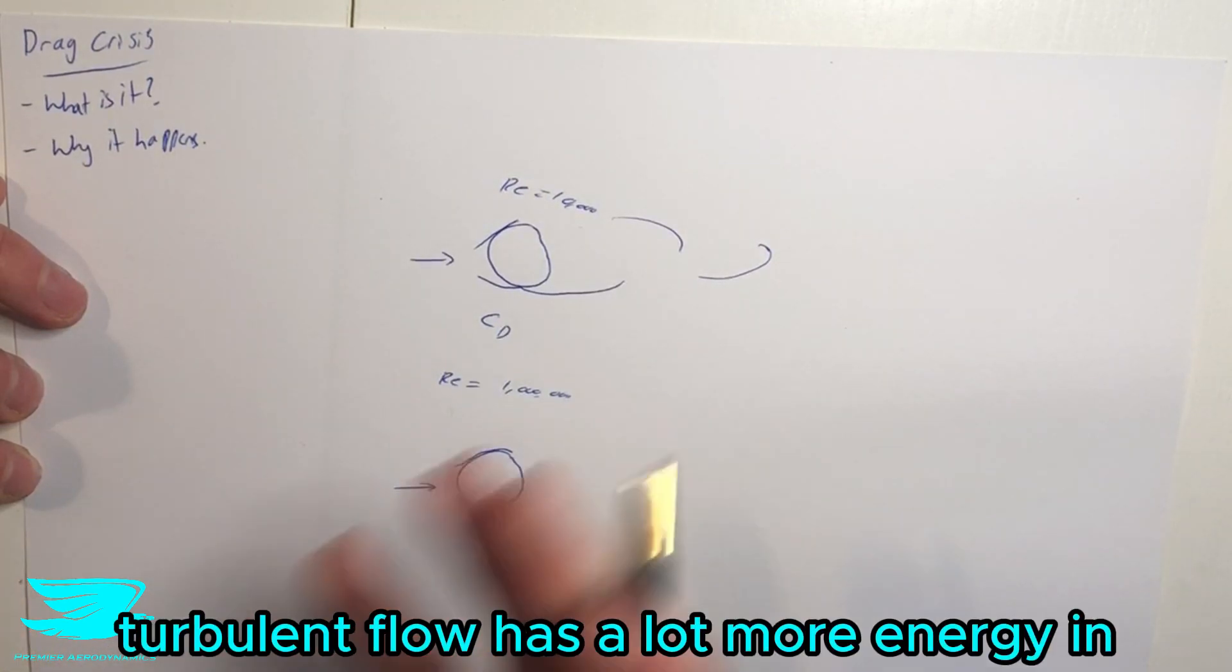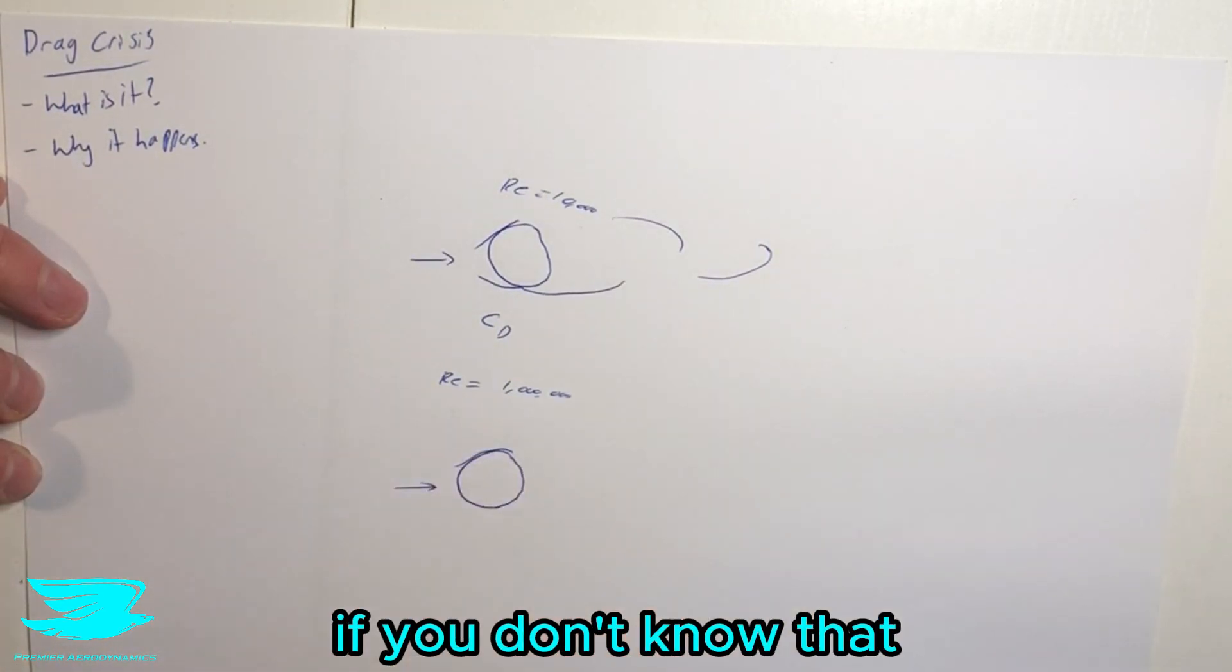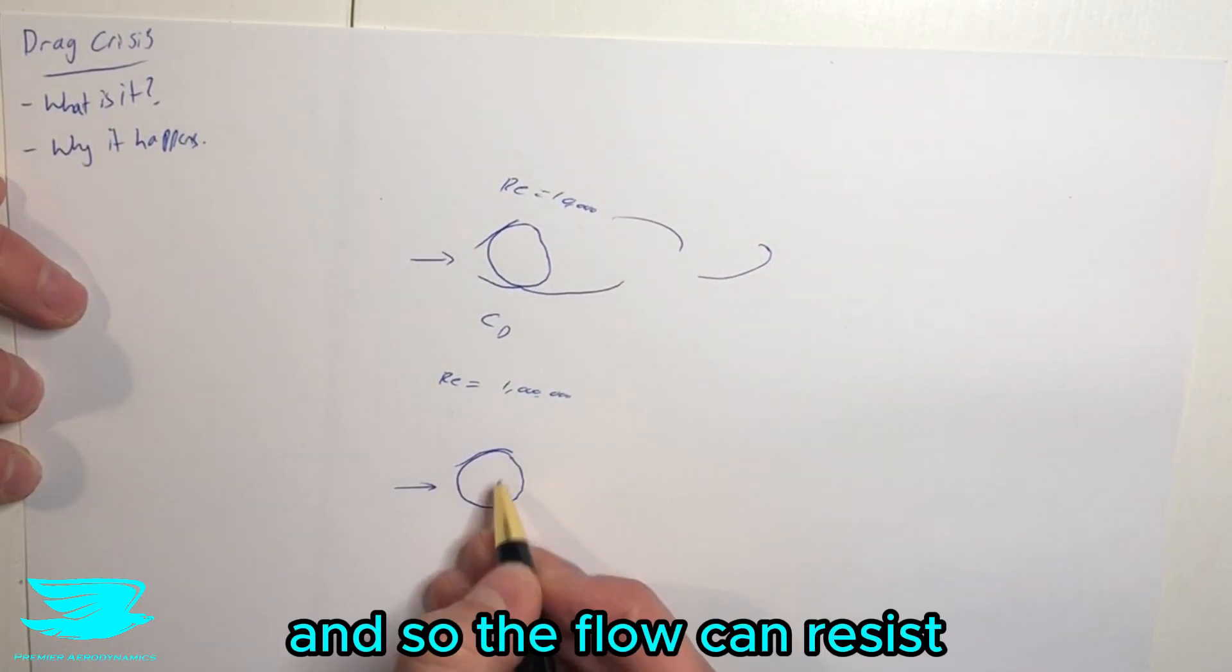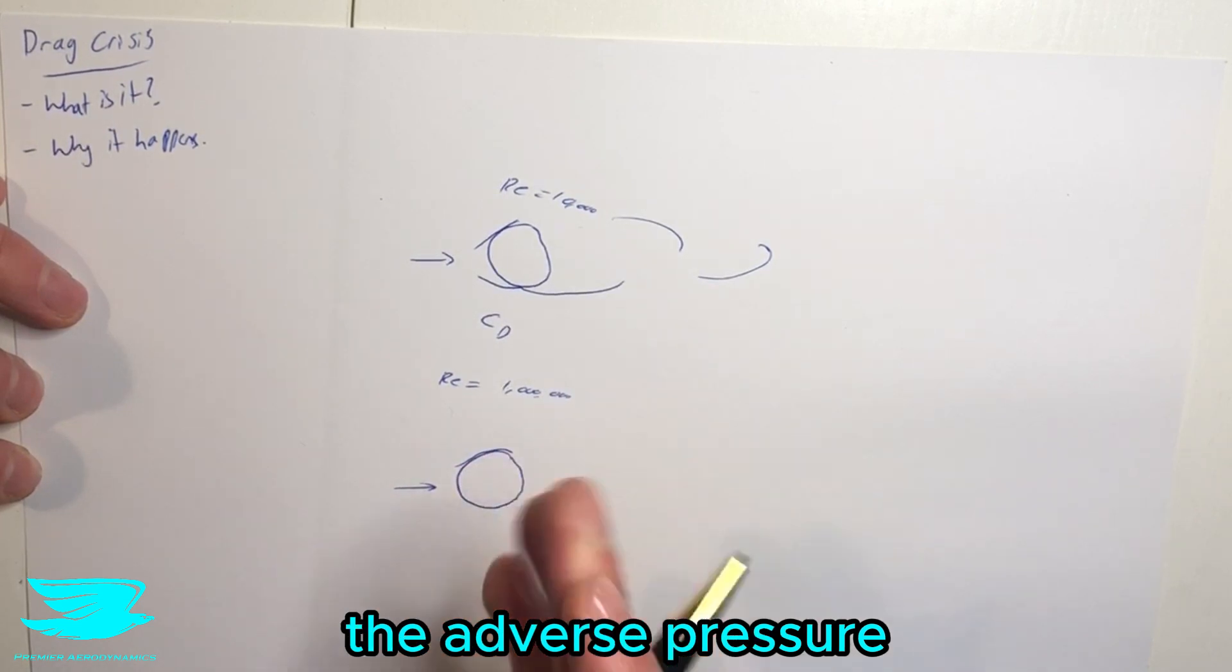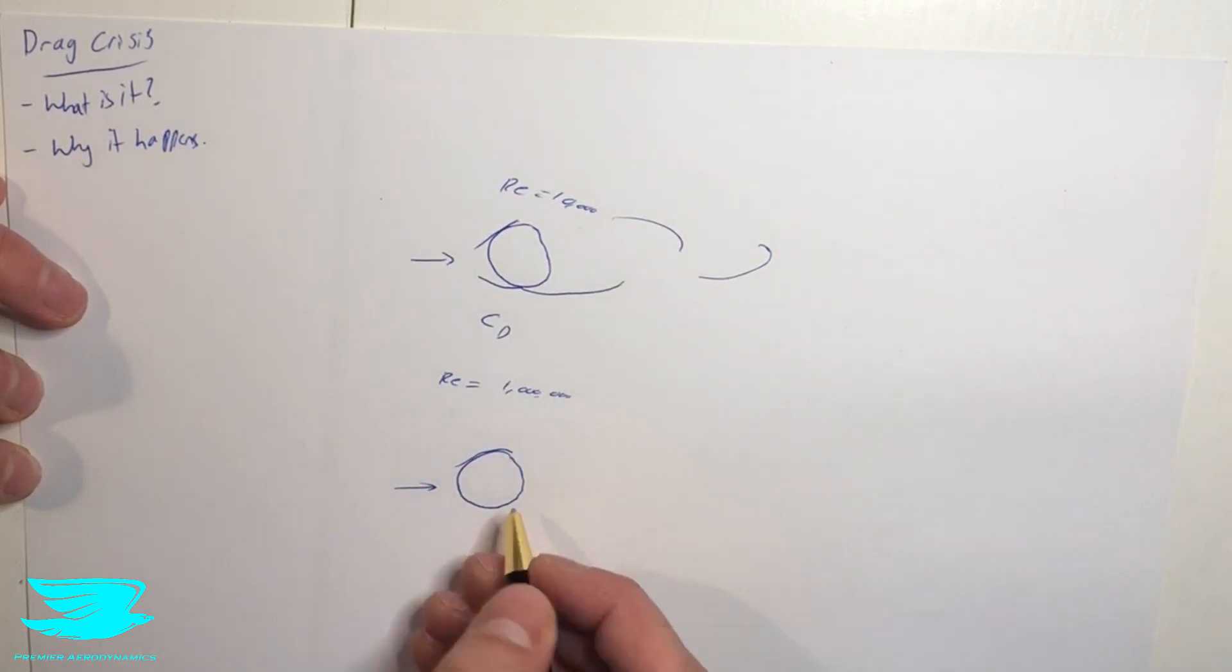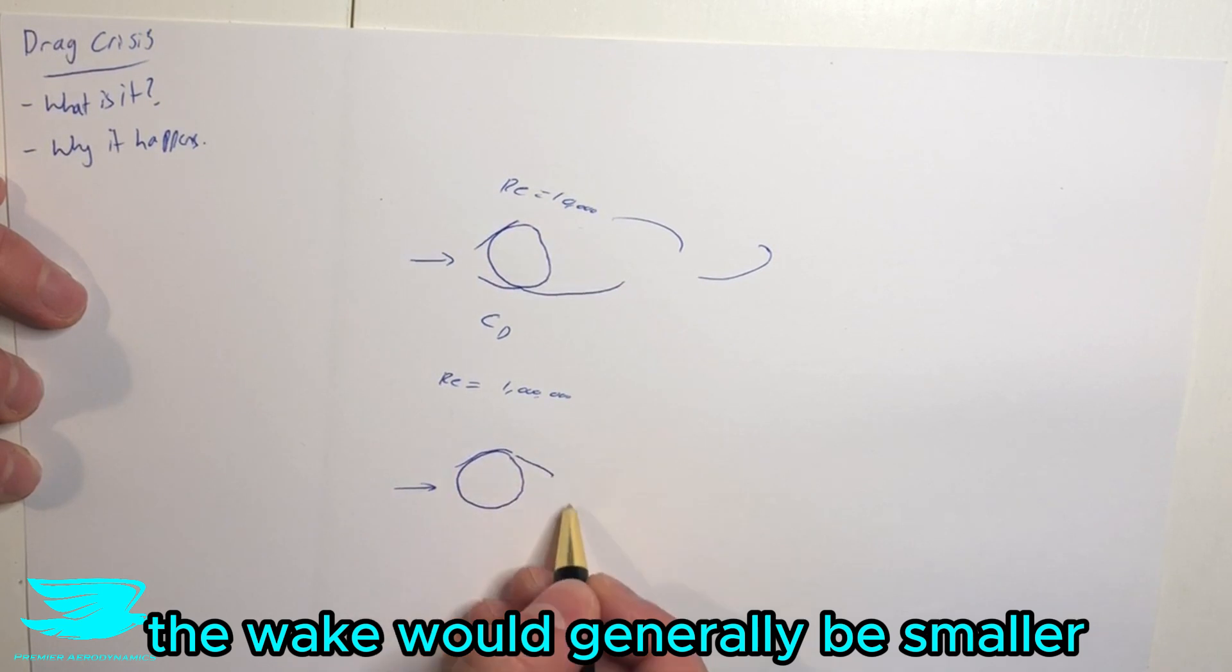And that's because the turbulent flow has a lot more energy in the boundary layer. And if you don't know that, check out this video here. And so the flow can resist the adverse pressure gradient longer and stay attached. As a result, the wake will generally be smaller.